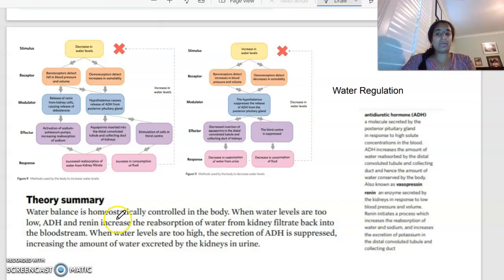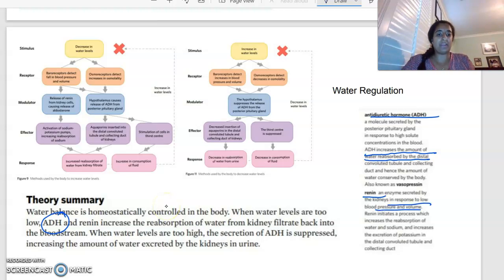Looking at water regulation, so water balance, osmoregulation is controlled, again, by the body. When water levels are too low, ADH is a specific type of hormone called antidiuretic hormone, and it's secreted by the posterior pituitary gland in response to high solute concentrations in the blood. So ADH actually increases the amount of water that's going to be reabsorbed. Renin as well, is an enzyme that's going to be secreted by the kidneys in response to low blood pressure and volume. And it initiates, again, reabsorption of water. So it increases the excretion of potassium and allows the increase of absorption of water. So there are two that are really important when we talk about water regulation, and they can filtrate that back into the bloodstream.